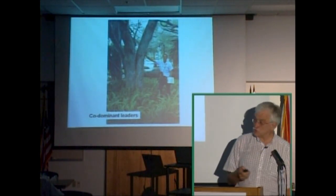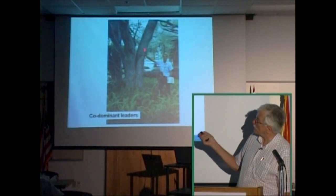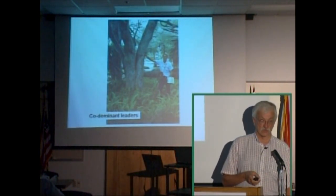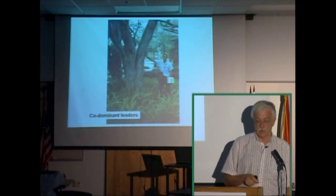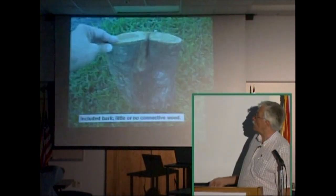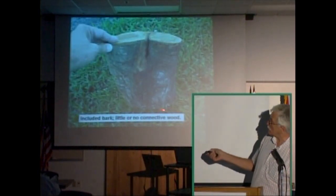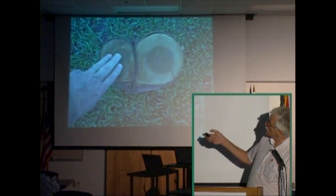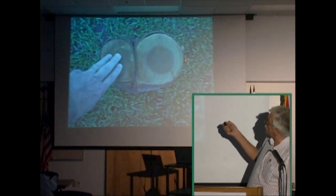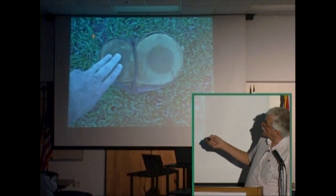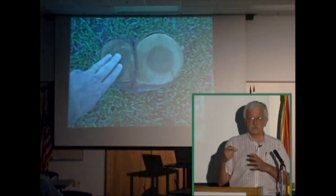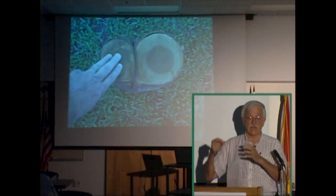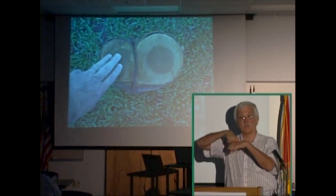You look for co-dominant leaders — a separate stem here and a separate stem there with no connective wood between them. I used to have students do dissections of smaller trees with co-dominant leaders to illustrate what it means to have no connective wood. Here's one such dissection: you can see the bark around each stem touching, but there's no connective wood. As the tree grows and increases diameter, the end pieces get heavier, creating stress, and a little wind knocks it off.